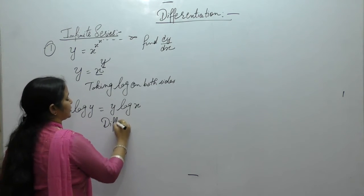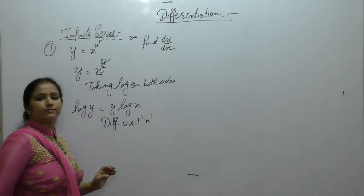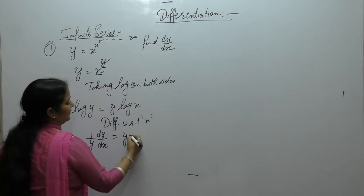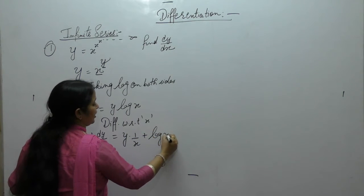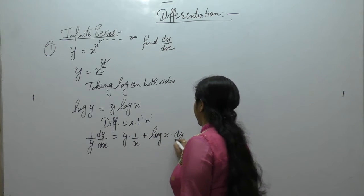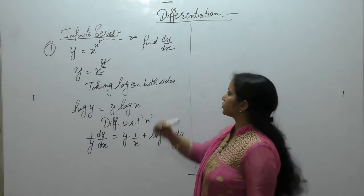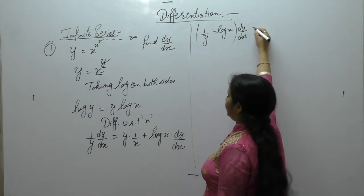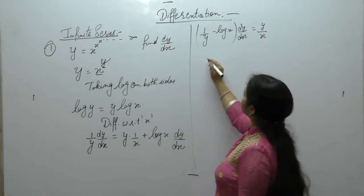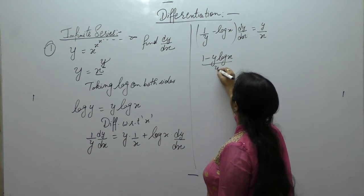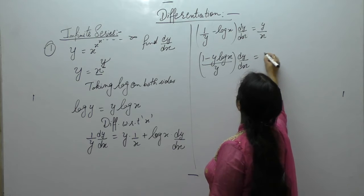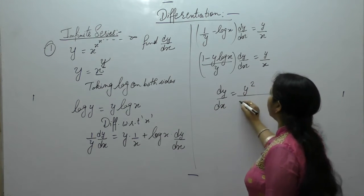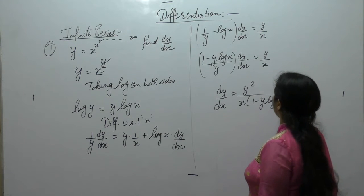Now differentiate with respect to x. Derivative of log y is (1/y)·dy/dx. Using the product rule on the right: first function y times derivative of log x which is 1/x, plus log x times derivative of y which is dy/dx. Collecting dy/dx terms: (1/y − log x)·dy/dx = y/x. Taking LCM: (1 − y·log x)/y · dy/dx = y/x. Therefore, dy/dx = y² / [x(1 − y·log x)].